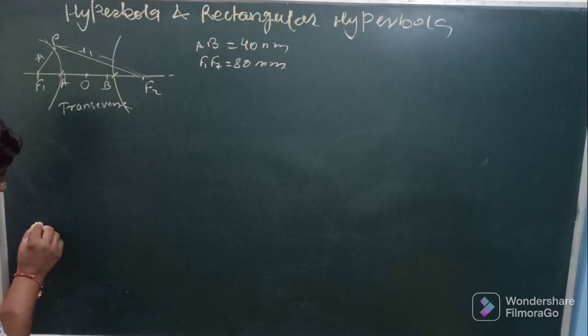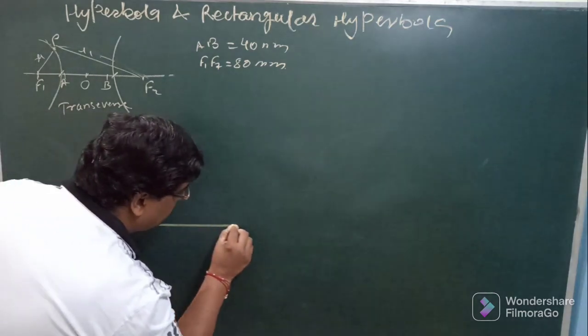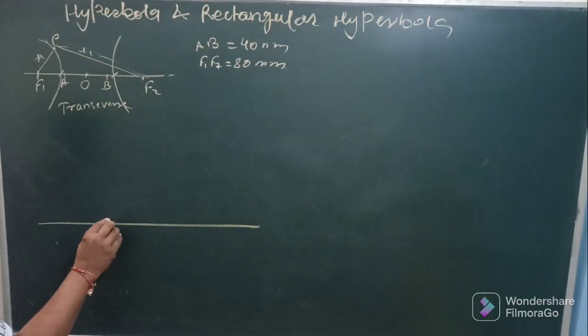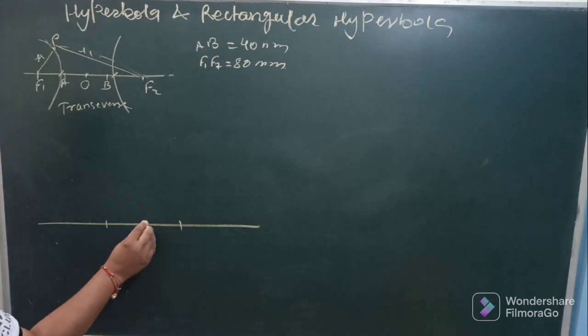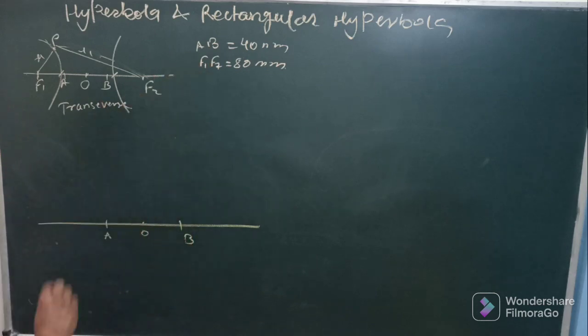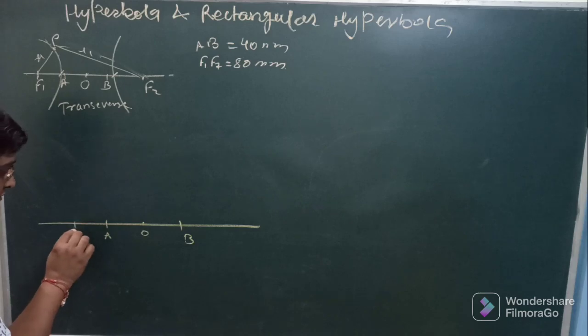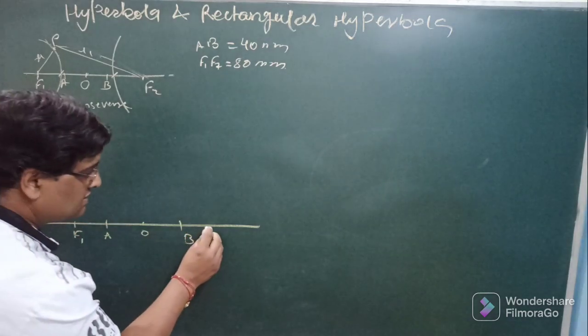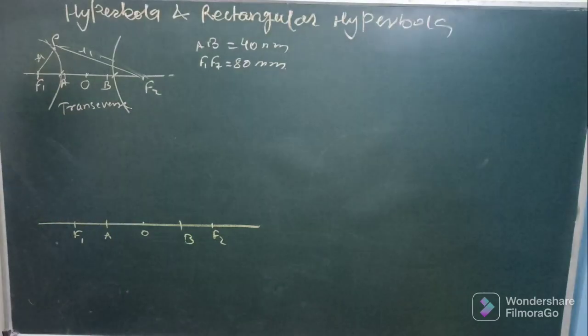What you have to do, just draw a horizontal line, mark ab somewhere here and point to O that is midpoint. So this ab is equal to 40 mm. Then you can find out f1 and f2 leaving 20 mm both the sides.